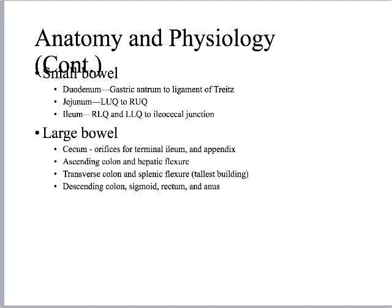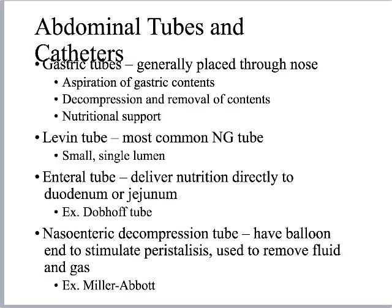The descending colon leads to the sigmoid colon and rectum, which is extraperitoneal, and the anus would be completely outside the abdomen in the area of the pelvis.